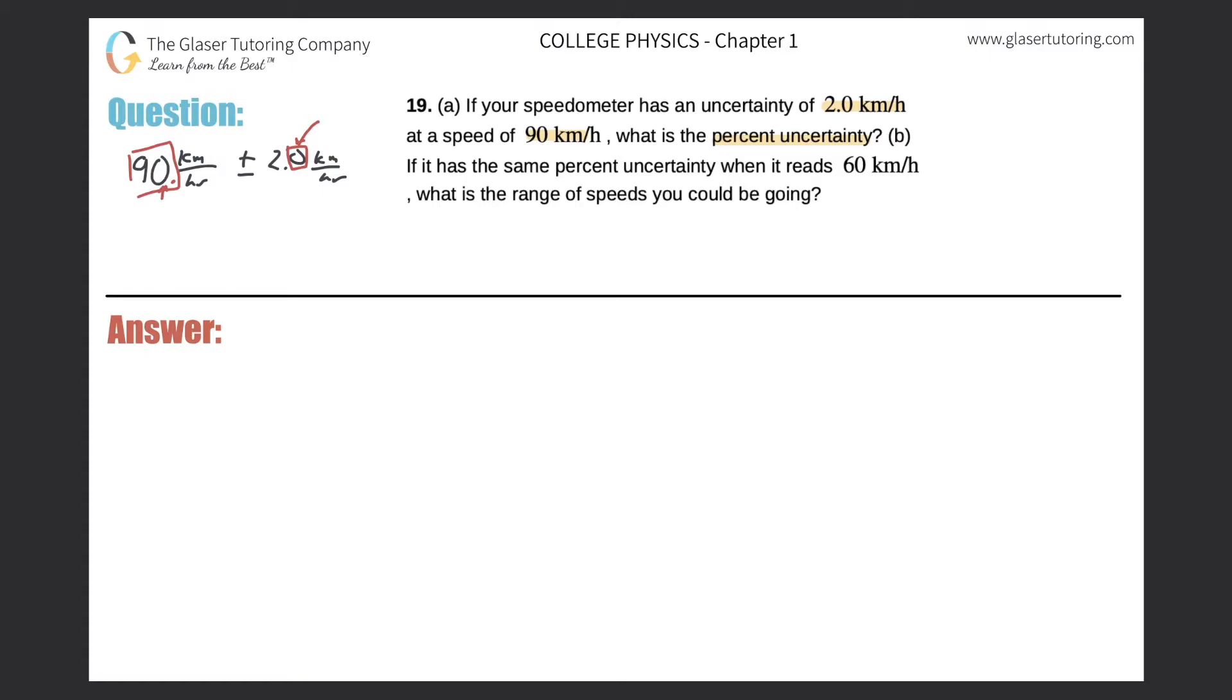Now really the speedometer should have read 90.0 kilometers per hour plus or minus 2.0 kilometers per hour. I decided to make it more precise. The other way I could have done it would be to say I should actually chop that zero off and just say it's plus or minus 2 kilometers per hour, and therefore now both my uncertainty value and the measurement value would have the same uncertainty, meaning they would be known to the ones place.